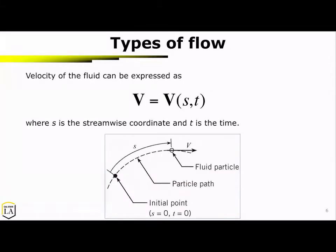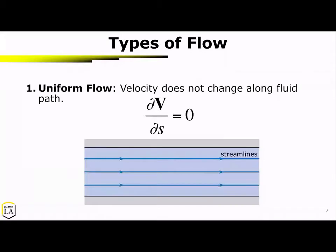Now we're going to talk about types of flow, where the velocity of the fluid can be expressed by considering its movement along the streamline — that's what S means — and as it's changing with respect to time. The first type of flow, usually the easiest to deal with, is uniform flow. The streamlines show we're moving from left to right, and the velocity is not changing as you move along the streamlines, meaning velocity one equals velocity two equals velocity three.